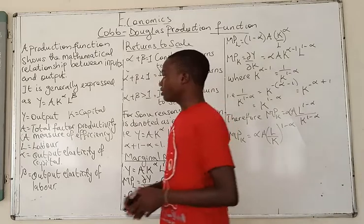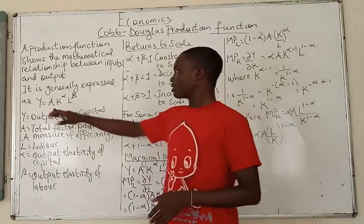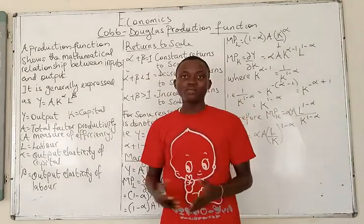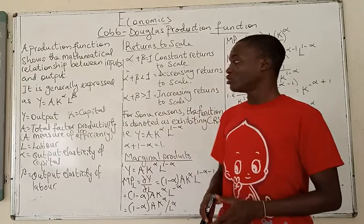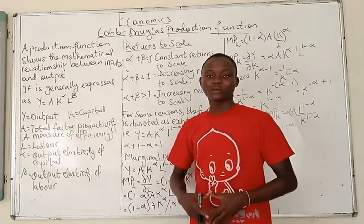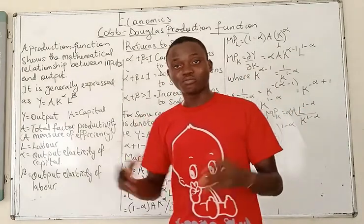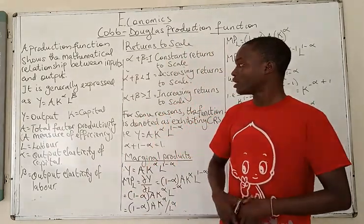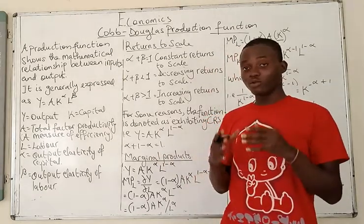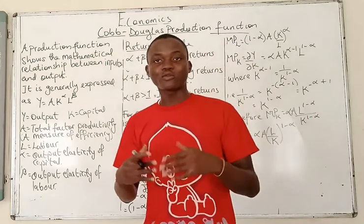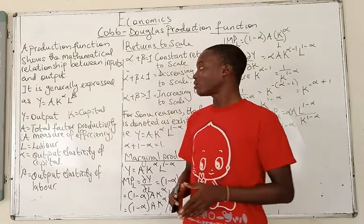I don't think I really need to explain what output is, what capital is, and what labor is. But what is total factor of productivity? That simply measures the efficiency of the inputs that are being used. If you check some textbooks, they might refer to A as technology, some might just call it efficiency. Generally, it is simply the total factor of productivity, and it measures the amount of growth in output that is not a result of the growth in the input in this particular model.